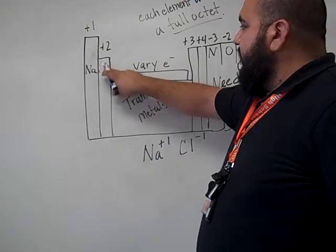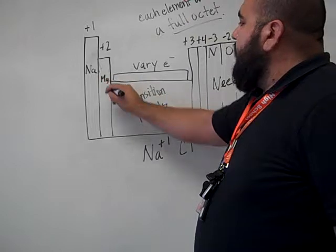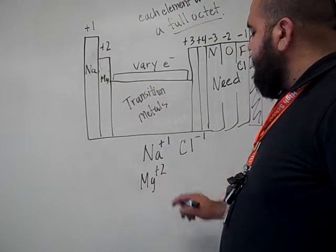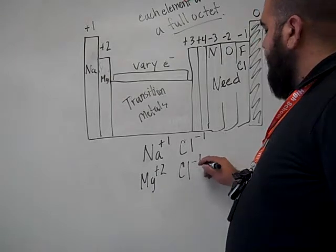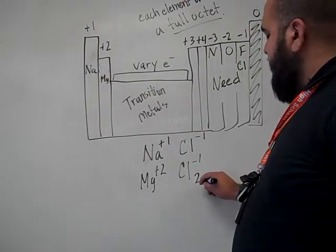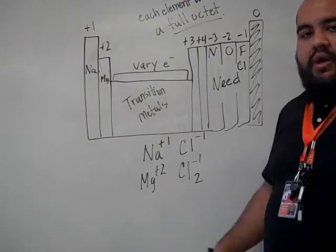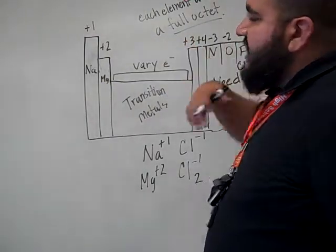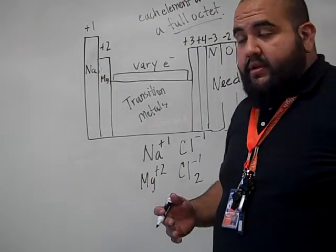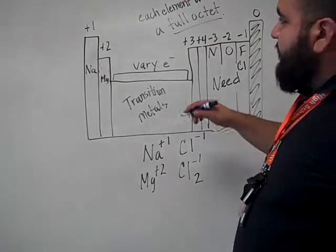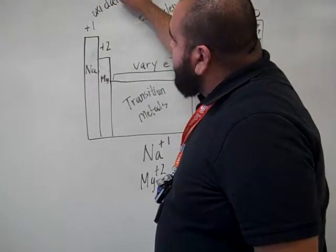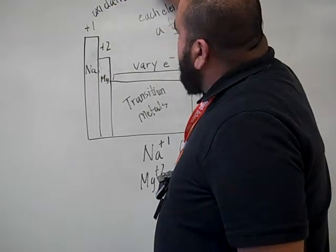Same thing if we were to bond magnesium, which is over here. When magnesium binds to chlorine, magnesium has a plus 2, chlorine has a minus 1. So we got to add a chlorine at the bottom to offset that charge. These charges are not only the amount of electrons that we have and the amount of electrons that we need, but they're also called oxidation states.